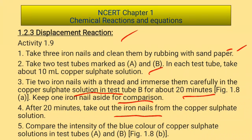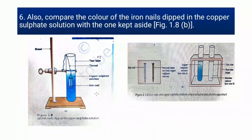The reason is that the copper sulphate solution contains copper²⁺ ions, which are responsible for the blue color, and they are gradually being removed from the solution. Also, compare the color of the iron nails dipped in the copper sulphate solution with the one kept aside.